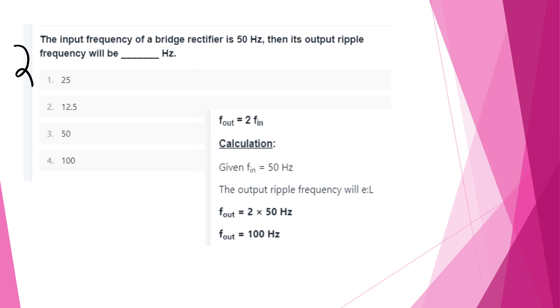The input frequency of a bridge rectifier is 50 Hz. The output ripple frequency will be 100 Hz, i.e., 2F.